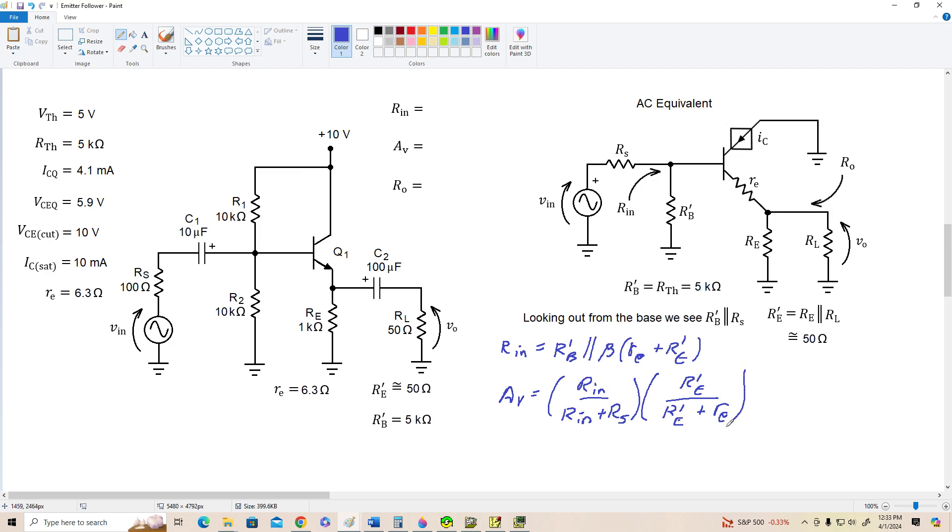So this would be the voltage gain for this circuit if we connect a source that has a value of RS associated with it, which is typically what's going to exist in the real world.